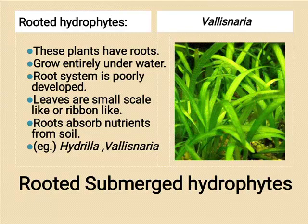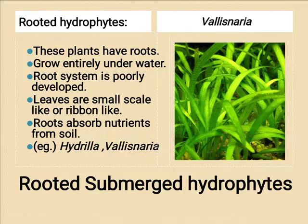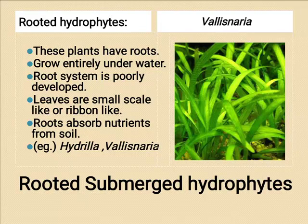The second category is rooted submerged hydrophytes. This group is completely submerged and anchored to the substratum or soil. They are highly affected by light penetration, so these plants come under shade-loving plants. They may have long internodes, absence of palisade parenchyma, and presence of chloroplasts in the epidermal cells.